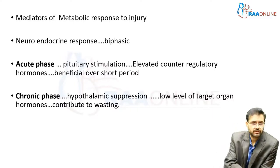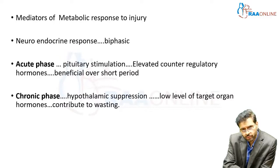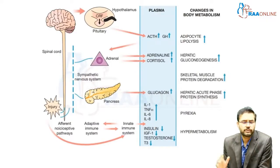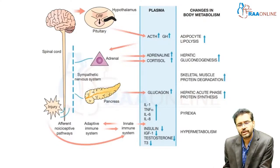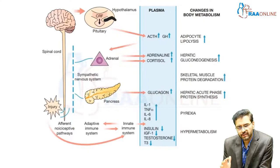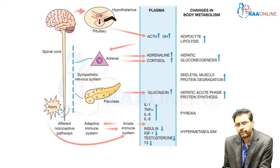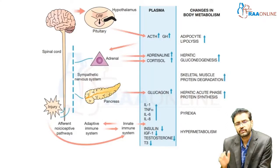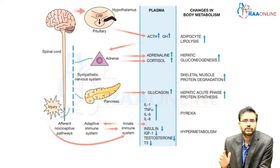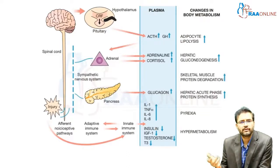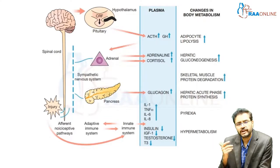The neuroendocrine response involves the following components: the hypothalamus, pituitary, the spinal cord, and the nociceptor receptors. Once there is stress, there will be stimulation of these receptors, and in response there will be secretion of corticotropin-releasing hormone by the hypothalamus. This corticotropin-releasing hormone acts on the pituitary and produces ACTH. This adrenocorticotrophic hormone acts on the adrenals, resulting in increased production of cortisol and aldosterone. Simultaneously, there will also be increased levels of glucagon secretion and growth hormone secretion.